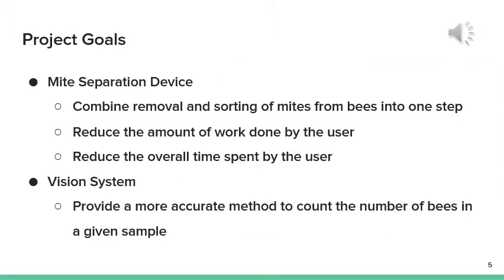The goals of the mite separation device were to combine the removal and sorting of mites from the bees into a single step, to reduce the amount of work done by the user, and to reduce the overall time spent by the user. For the vision system, the main goal was to provide a more accurate method to count the number of bees in a given sample than the simple scoop method currently used.